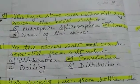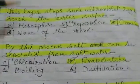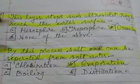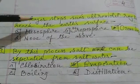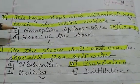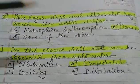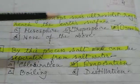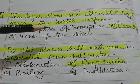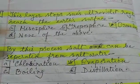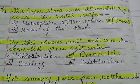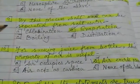Question 8: this layer stops the sun's ultraviolet rays from reaching the earth. Option A) mesosphere, B) troposphere, C) ozone layer, D) none of the above. Option C, the ozone layer, is the correct answer.